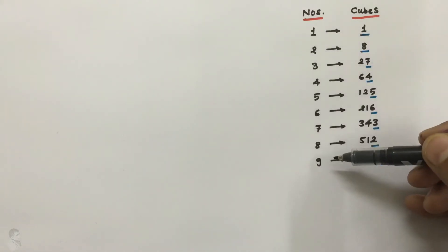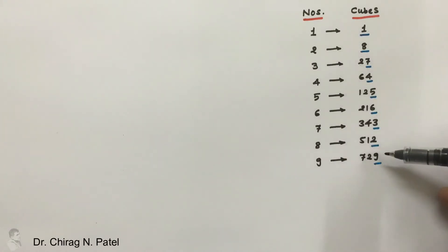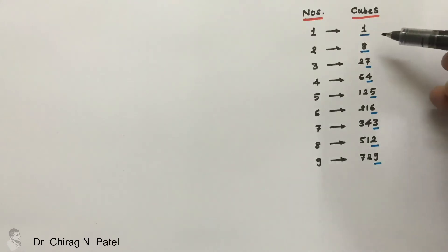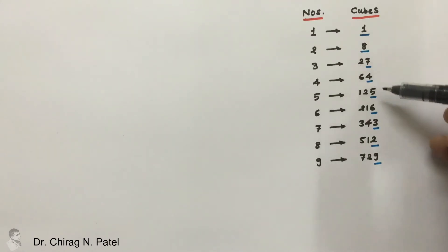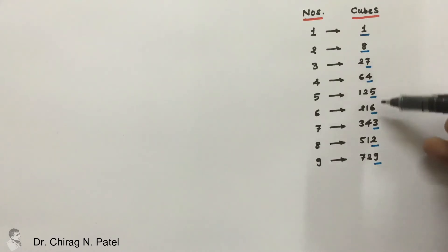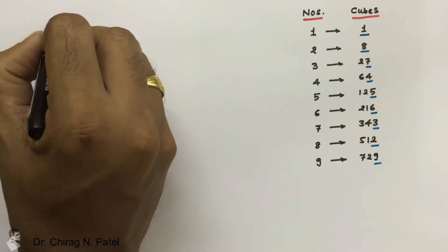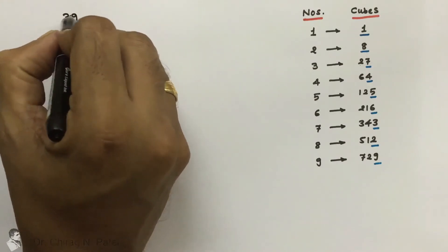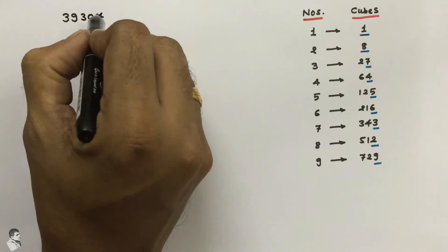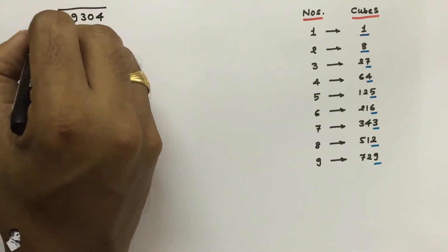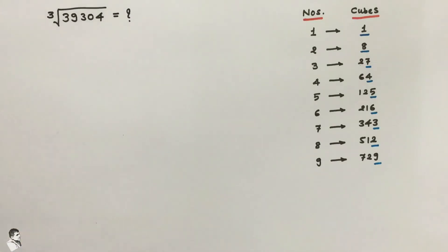How to find out the cube root of any number. Here we see that number 1 to 9 and the cubes of those numbers are written already. You have to check the last digit of those cubes, and we are going to use that last digit in this method to find out the cube root. It is very difficult to find out the cube root normally, but if you use this method it is very easy.